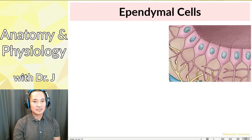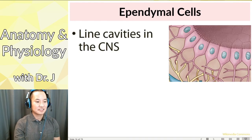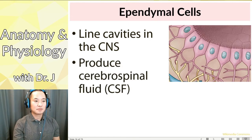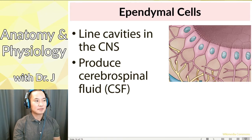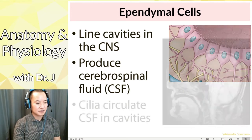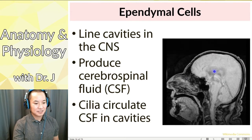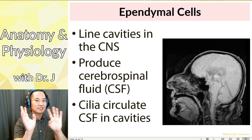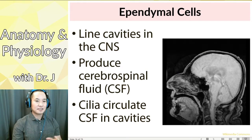Ependymal cells line the cavities of the central nervous system — there are spaces in your CNS, it's not a completely solid mass. They make cerebrospinal fluid, or CSF, which is very similar to your extracellular fluid and blood plasma, but more like an ultra-purified version. Ependymal cells also have cilia — those little finger-like projections that wave and beat — and this is what causes the cerebrospinal fluid to actually circulate.